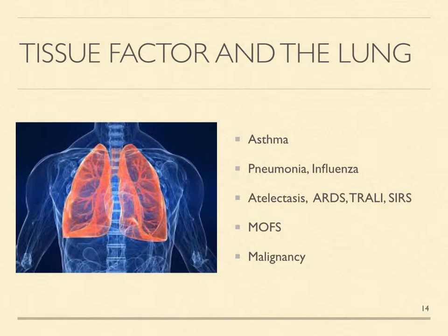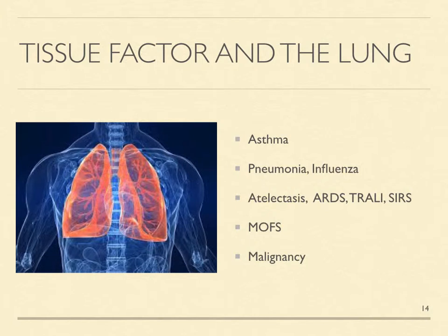Systemic thrombin elevations due to surgery, trauma, sepsis, blood transfusion, and cardiopulmonary bypass pump exposure cause harmful inflammatory effects in lung tissue that manifest as atelectasis, ARDS or adult respiratory distress syndrome, transfusion-related lung injury or TRALI, and systemic inflammatory response syndrome or SIRS. All these phenomena have different names because they occur under different circumstances, but they are all essentially early manifestations of multi-organ failure syndrome or MOFS. Like the brain, lung tissue exhibits exaggerated vulnerability to both primary and secondary forms of malignancy.